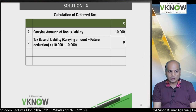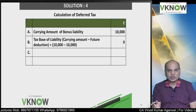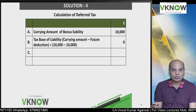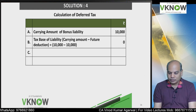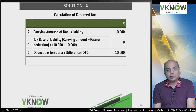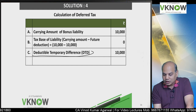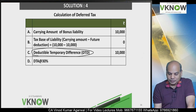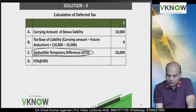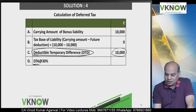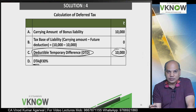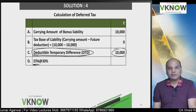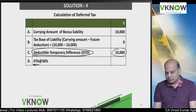Because in future you will get the deduction, today the tax base is 0. If you make this also equal to 10,000, which means there is no tax consequence in future — that is not true. When you will pay the liability, you will get the deduction. This is called deductible temporary difference of 10,000, and therefore deferred tax asset. When it is deductible, you will create DTA, because you will save tax in future.